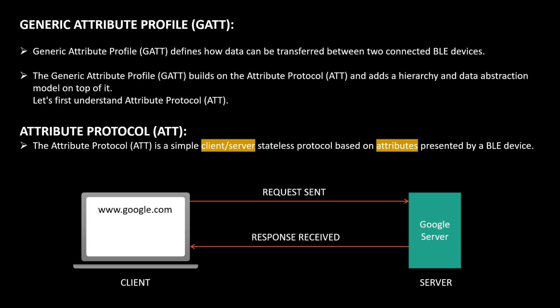To understand the client-server relationship, consider this example: when you type google.com in a laptop browser and hit enter, the request is sent to the Google server. If the request is correct, the Google server responds and the search page is displayed on your browser. Here, Google server is the server holding the data, and your laptop browser is the client requesting it. A similar client-server relationship exists in Bluetooth.